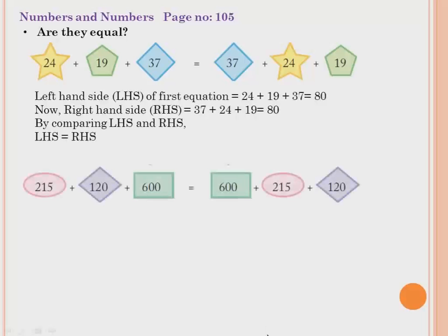Now the next example: 215 plus 120 plus 600 equals 600 plus 215 plus 120. Notice a short trick here — the same numbers 600, 120, and 215 appear on both sides, just rearranged.